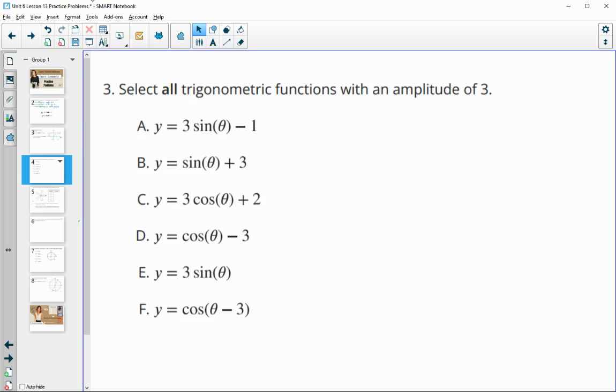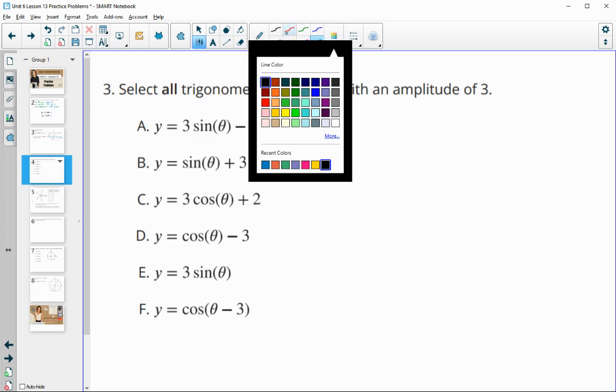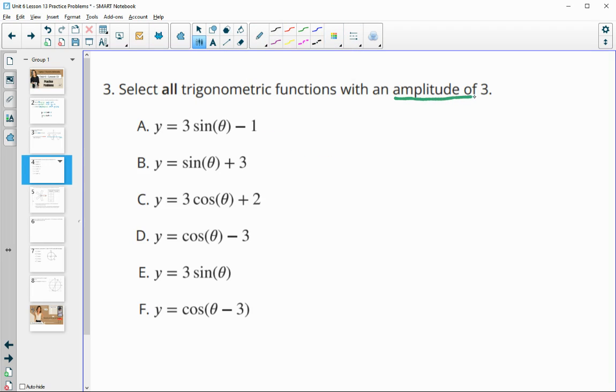Number three, select all trig functions with an amplitude of 3. Remember, amplitude is the number multiplied in front of the function. In letter A, the amplitude is definitely 3. B is not, because the amplitude is 1 here. C has 3 times cosine, so that has an amplitude of 3. D is 1 times cosine, so that does not. E is 3 times sine, so that has an amplitude of 3. And F is 1 times cosine, so that does not have an amplitude of 3.